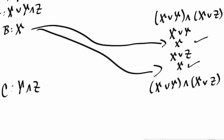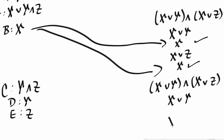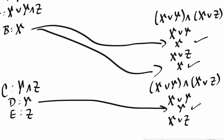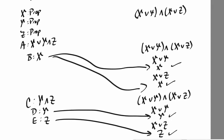Now let's look at the other subgoal — the one where we have assumption c of y and z. A proof of a conjunction is a pair of proofs: a proof d of y and a proof e of z. We're trying to prove a conjunction, so we need to prove two subgoals again. In one subgoal we have the claim x or y, and in the other we have x or z. In the first case we can prove the disjunction x or y by proving the right-hand side y, which we have a proof of: d. In the second case we can prove x or z by proving z, which we have a proof of: e. So in the end we had four subgoals to prove, but they were all proven by simply looking at the assumptions we had.